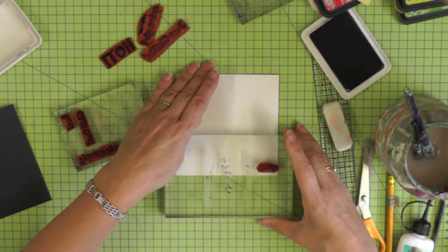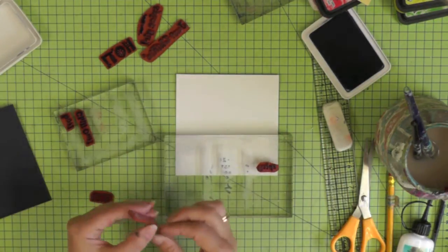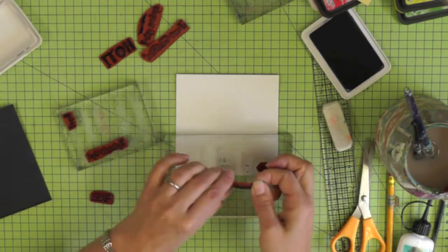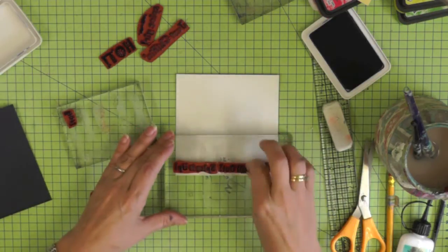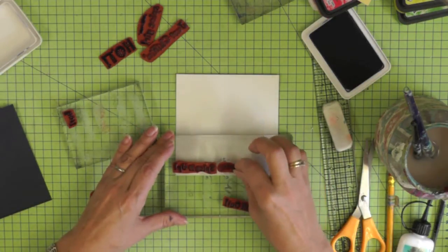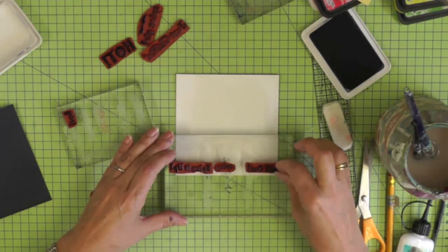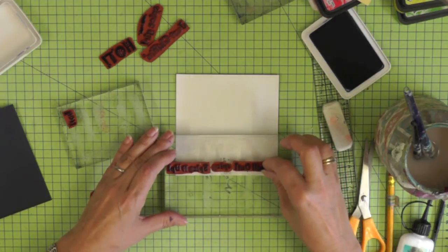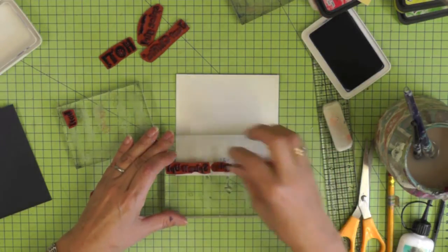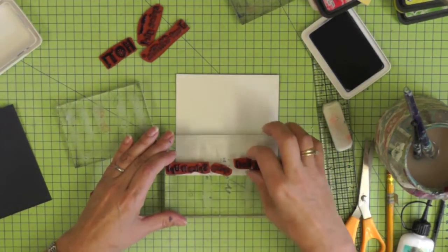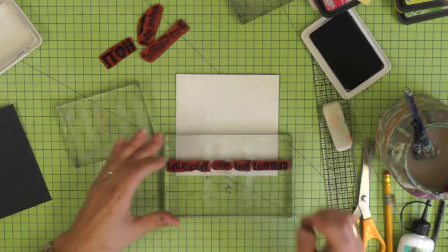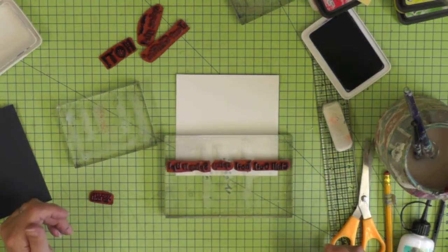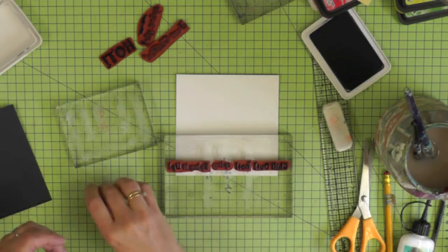Now I'm using my acrylic block. This one's slightly larger because I want it to go right across the bottom of the card and I'm just picking out some of my sentiments so that I get a word strip that is just slightly longer than the width of my cardstock. Once I'm happy that I've got a nice straight row of stamps I'm ready to begin stamping.